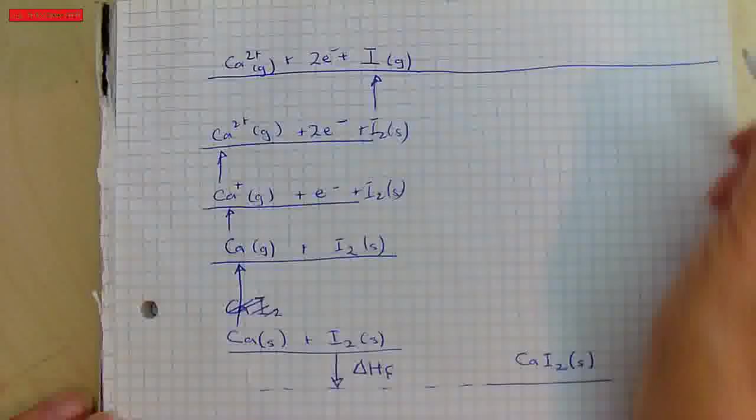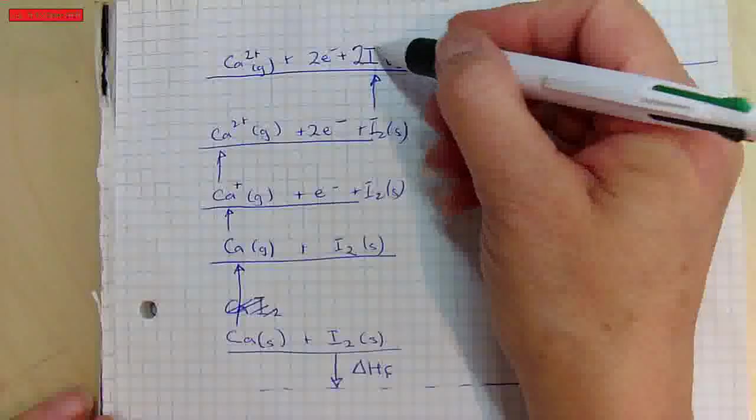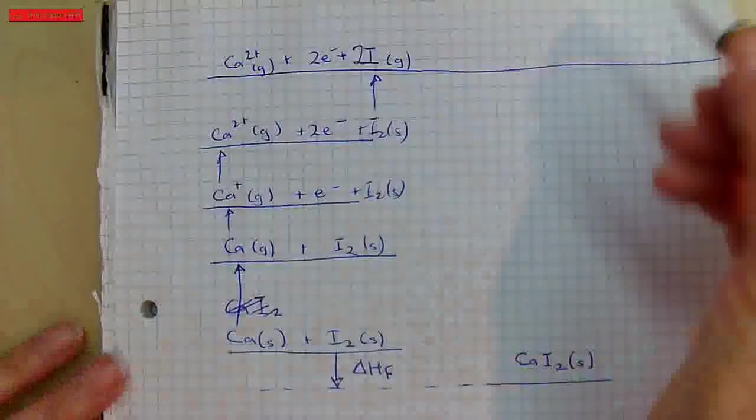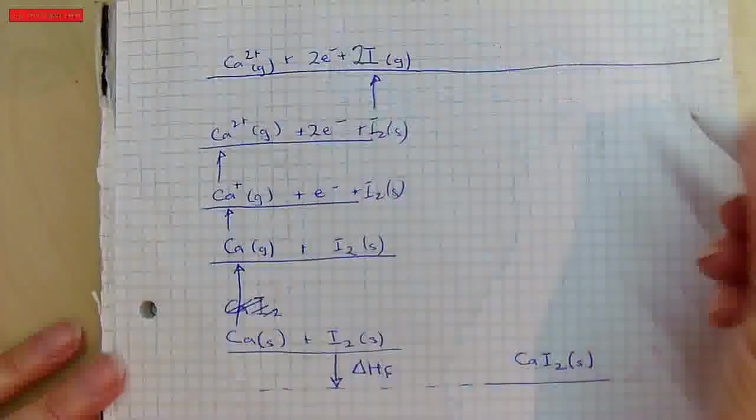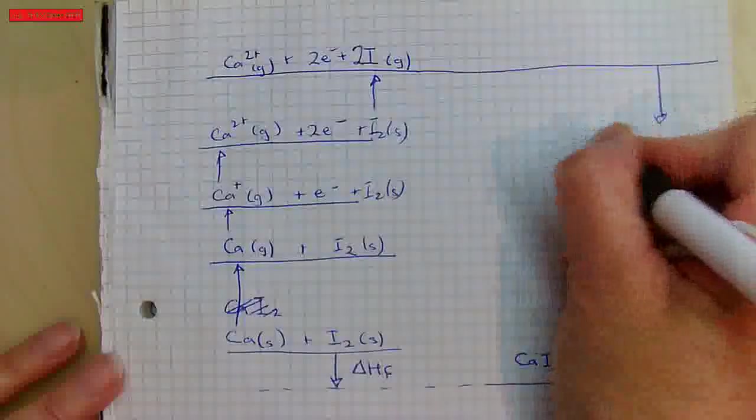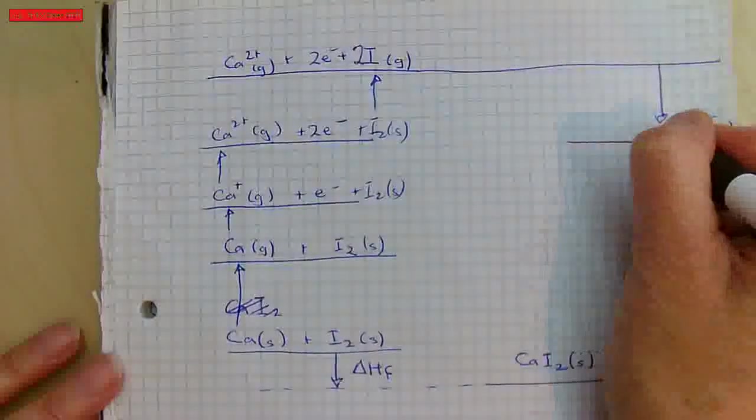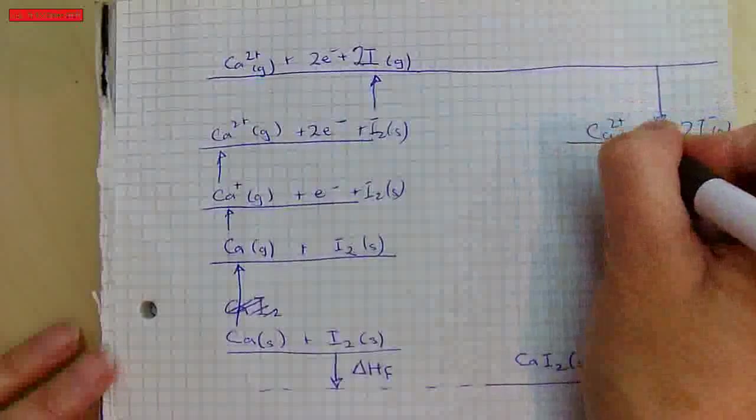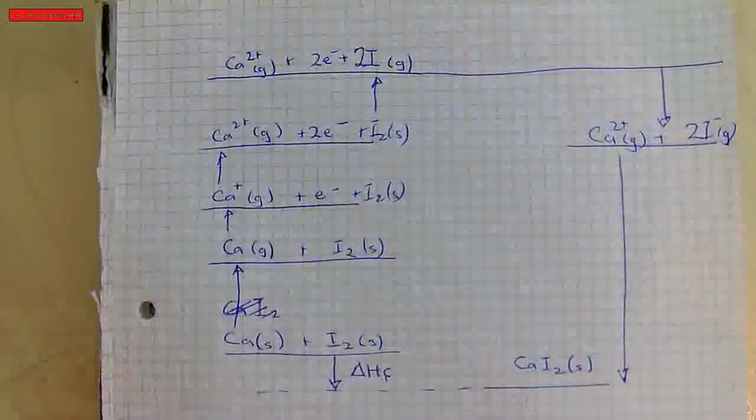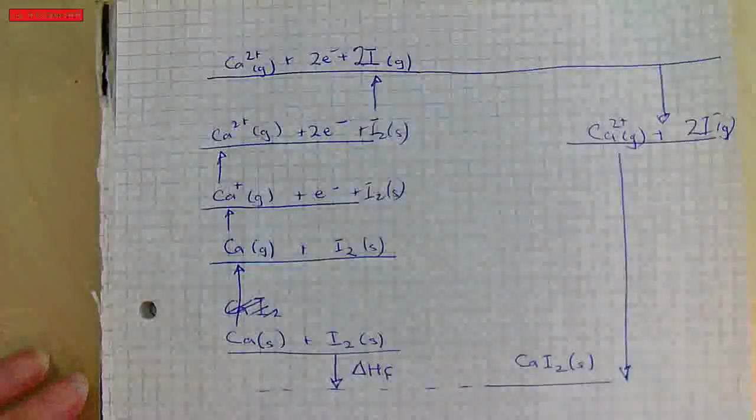So the next thing I'm going to do is the iodine is going to, oh, I've made a silly mistake, it's two iodine atoms and I must remember that when I come to do this calculation. All right, so the iodine is going to collect up these electrons. So I've got the first electron affinity for iodine. So 2I minus as a gas plus Ca2 plus as a gas and then these will give me the lattice enthalpy of formation.